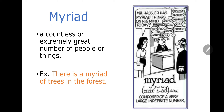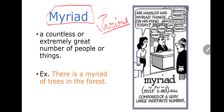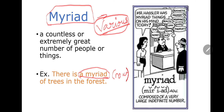Next word is myriad. Myriad means a countless or extremely great number of people or things — where there is variety, we use the word myriad. Example: There is a myriad of trees in a forest. Here myriad is used as a noun. But in another example: Mr. Hassler has myriad things on his mind — here myriad is used as an adjective before the noun. Both usages are correct.